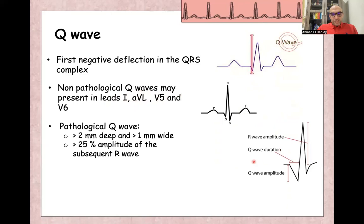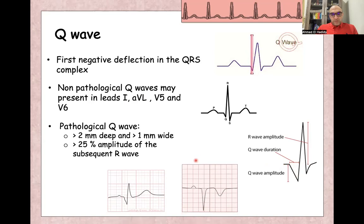Abnormal or pathological Q waves, which when amplitude of the Q wave is more than 25% of the amplitude of the R wave, or amplitude is more than two small squares in depth, or more than one small square in the width. These are examples of abnormal pathological Q waves, here and here.